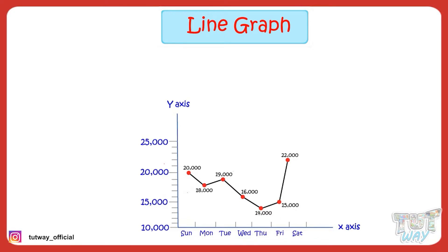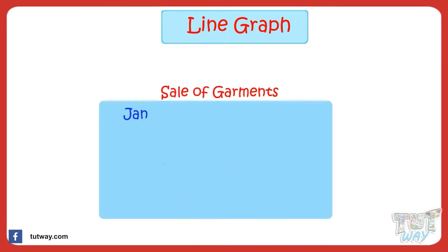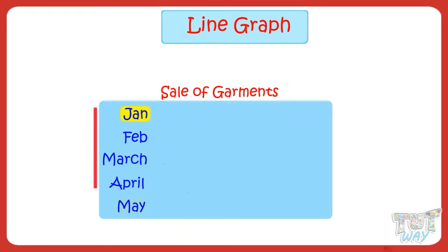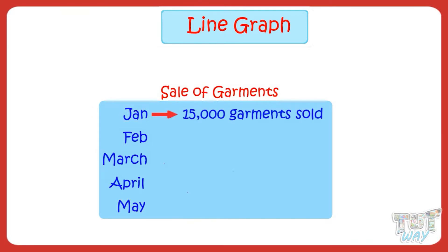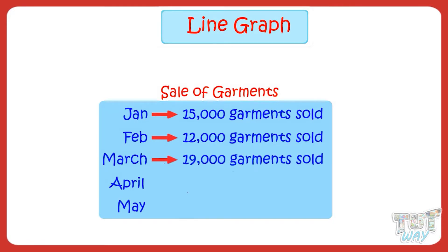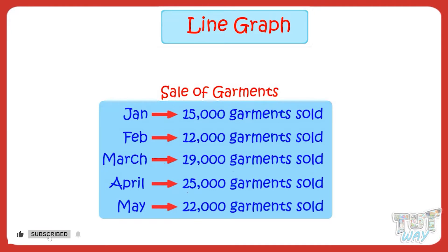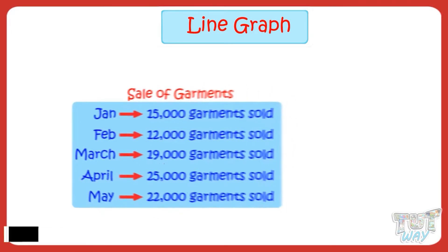Let's learn it more with the help of examples. Sale of garments was noted down for a particular company for a period of 5 months, that is January to May. 15,000 garments were sold in January, 12,000 garments were sold in February, 19,000 garments were sold in March, and so on. We have to draw this information in the form of a line graph.